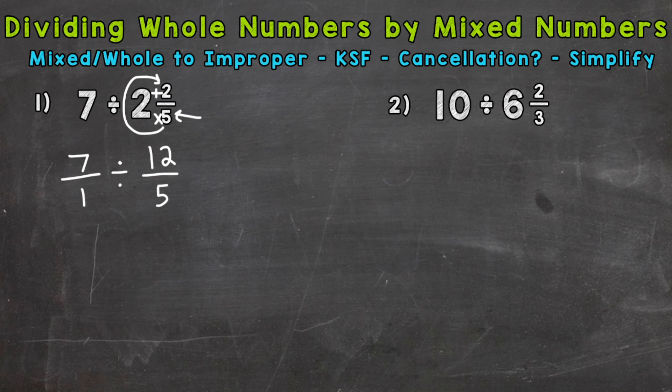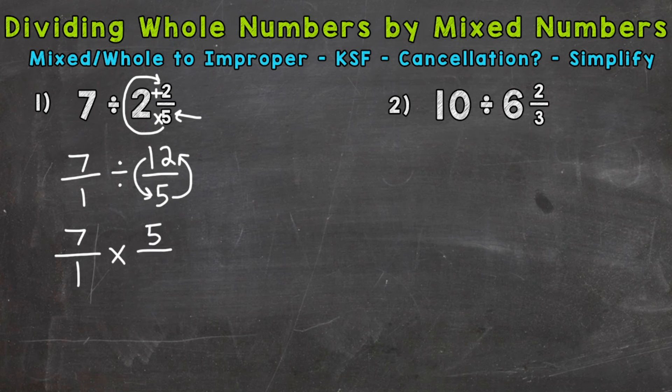Keep means that we always keep our first fraction, so I'm going to rewrite the problem using these steps. Keep — then we switch the division sign to multiplication. That means we need to flip our second fraction, so the 5 is now our numerator and the 12 is the denominator. Now we're ready to multiply straight across, but before doing so, we can check to see if we can use cancellation — simplifying the problem before multiplying. We look for common factors between our numerators and denominators, but in the case of number 1, the only common factor is 1, so we can't use cancellation here.